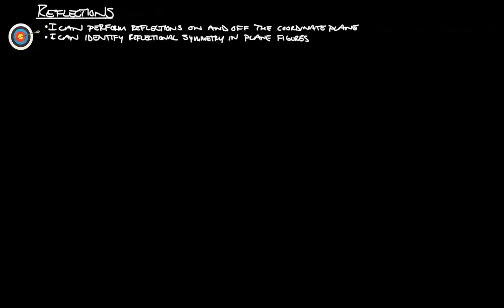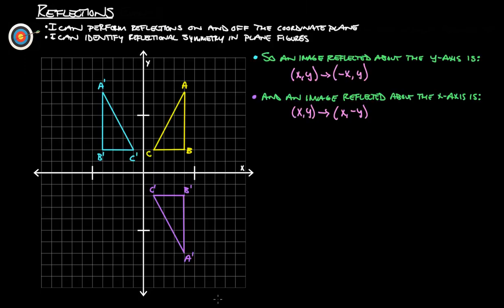Just to quickly reiterate what we were talking about: an image reflected about the Y-axis goes from (x, y) to (−x, y), and an image reflected about the X-axis has (x, y) go to (x, −y).